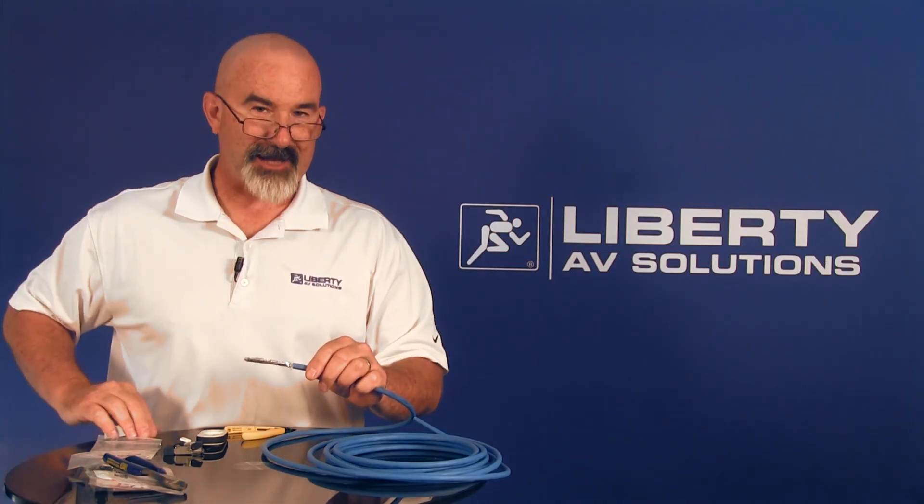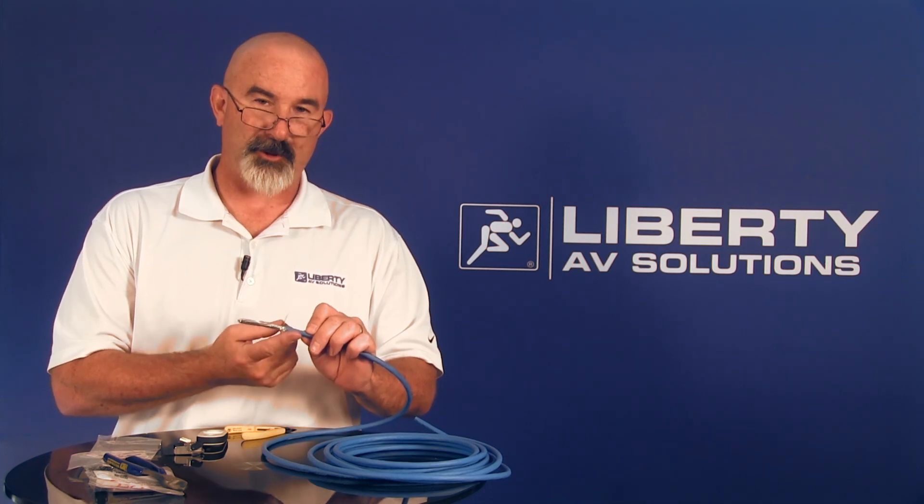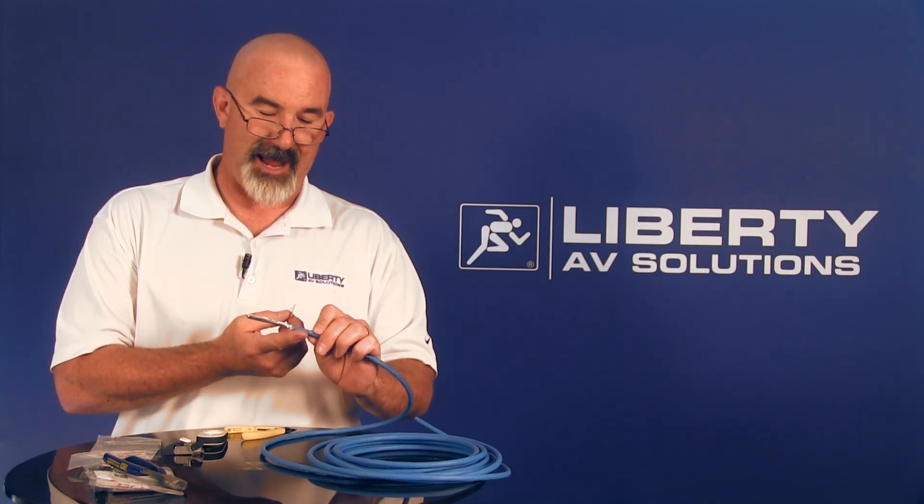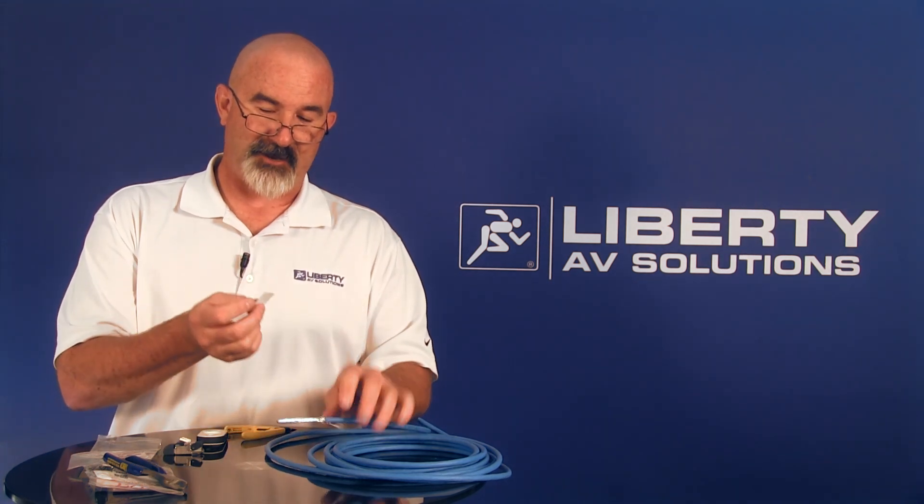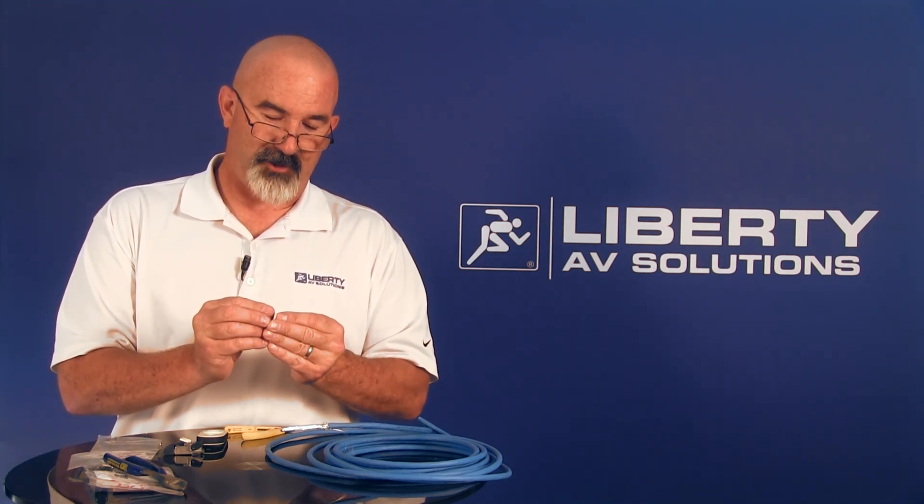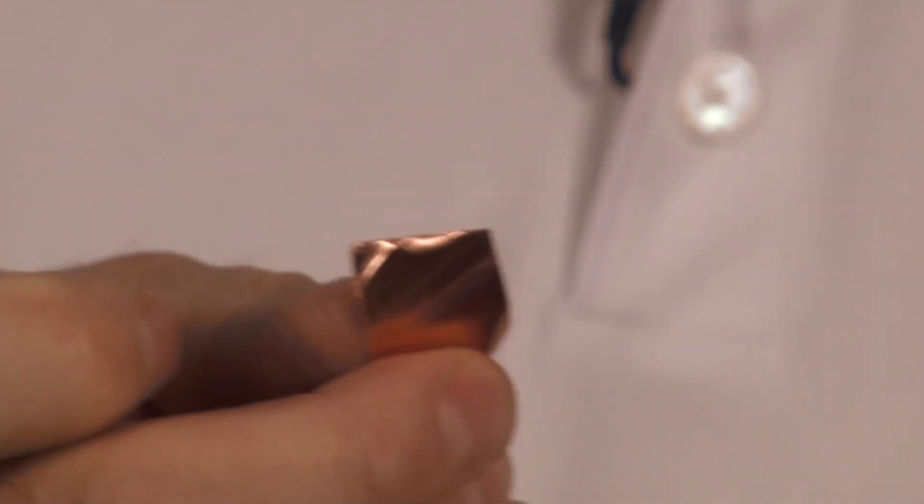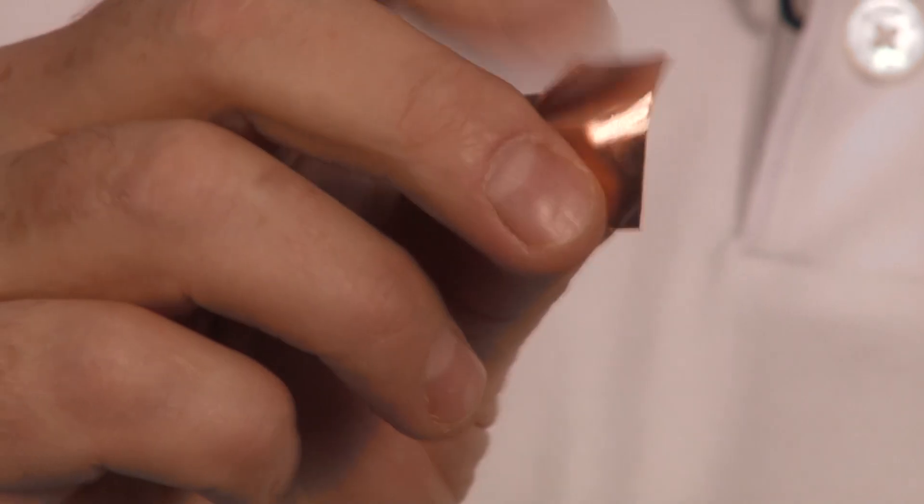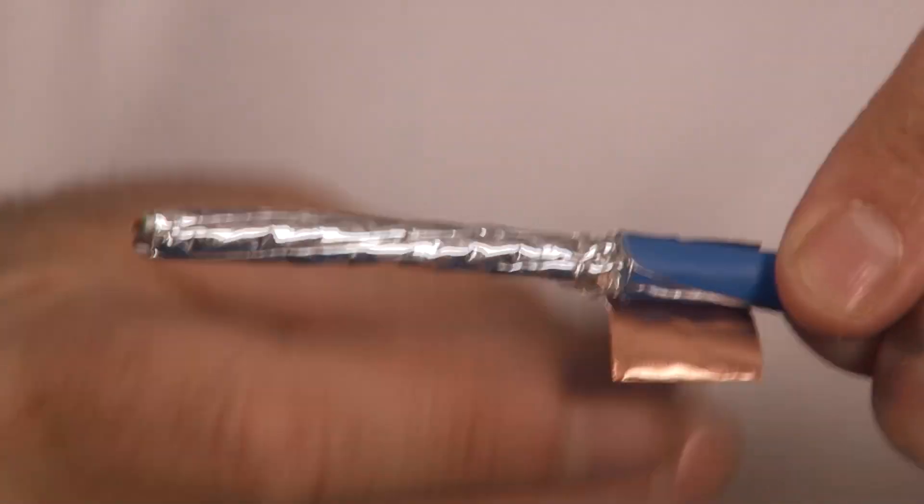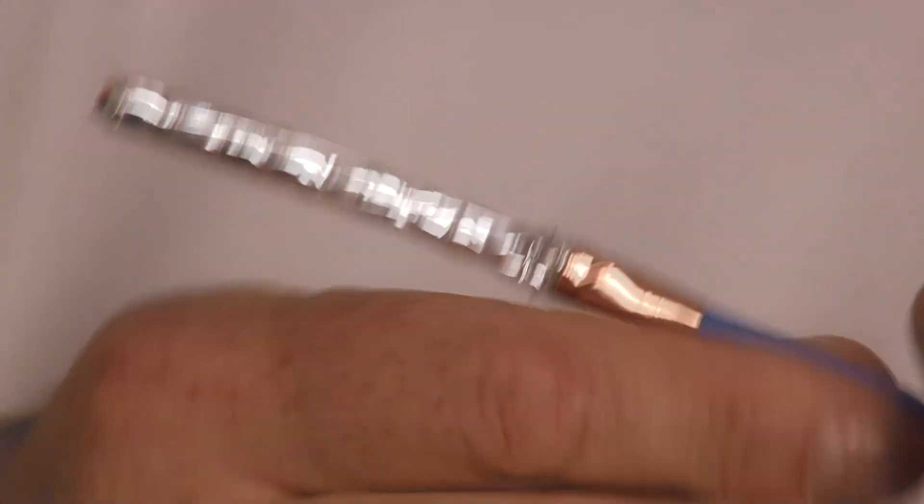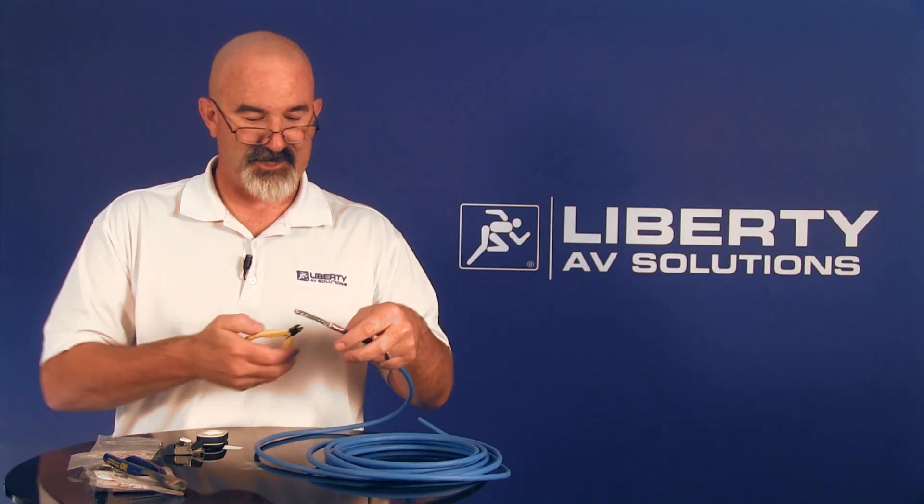Now for best practices with any shielded cable with RJ45 connectors, we recommend putting a little strip of copper tape on the edge of the jacket to capture the drain wire and give you a 360 degree ground. This is 3M 1181 copper tape. It has conductive adhesive. You always want to make sure that whatever copper tape you're using does have conductive adhesive. Now I can trim off my excess on the drain wire.